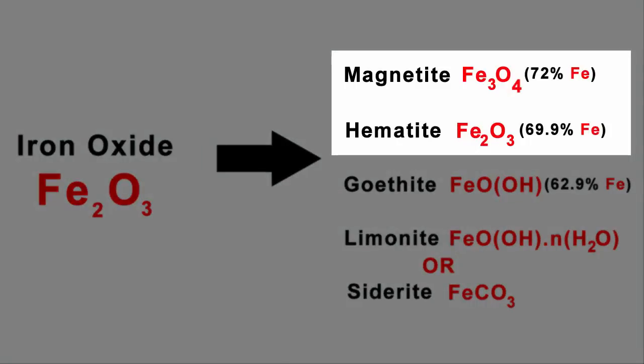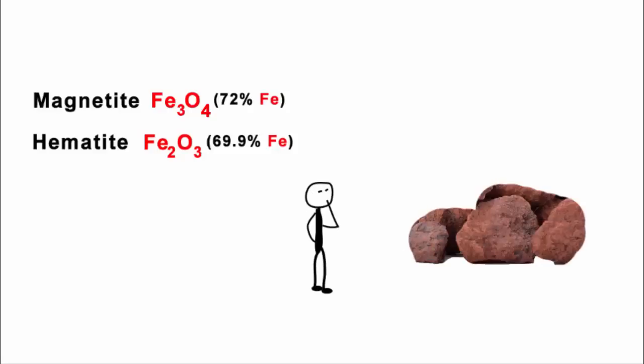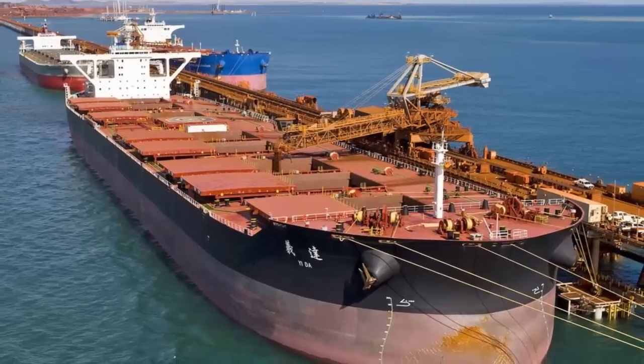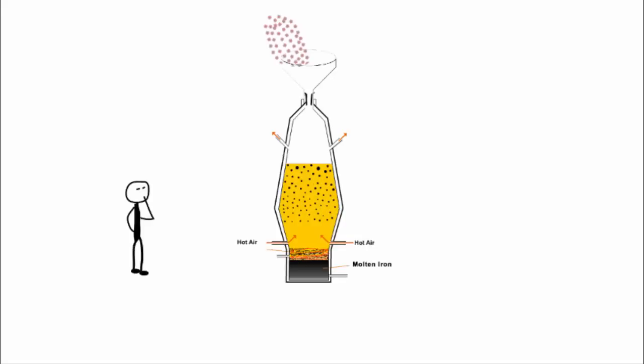These two ores are the most talked about. Ores containing very high quantities of hematite or magnetite are known as natural ore or direct shipping ore, which means they are of high export quality. These two ores can be fed directly into blast furnaces for making iron.